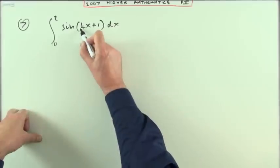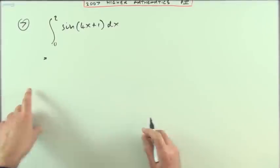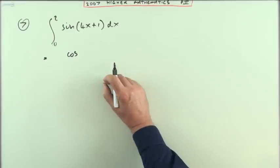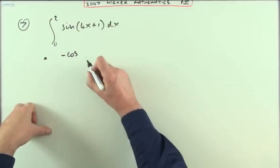Which means its derivative will just be a four. Well, leaping into it then, carrying out the integration. Sin must have come from a cos, but cos would have produced negative sin, so it must have been a negative cos to produce a positive sin.